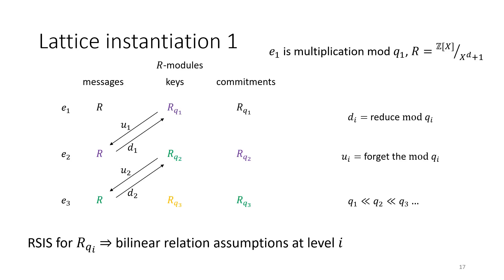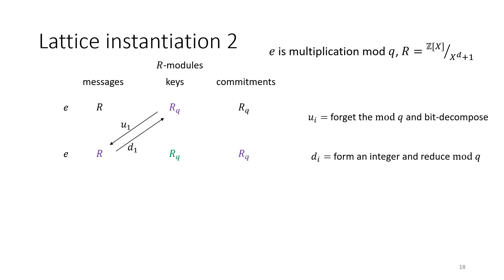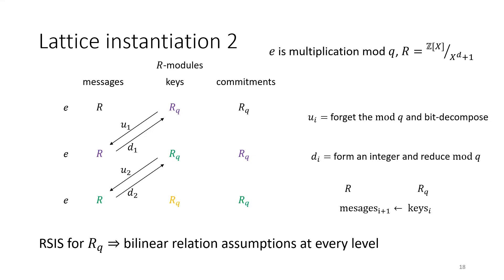In the end, we consider a slightly more complicated instantiation where we also bit-decompose the key elements as well as forgetting we're working mod Q. This gives us really small integers to work with, and then we can use the same modulus R_Q again. This gives a leveled bilinear module with as many levels as we like, and we only rely on a single ring-SIS assumption.